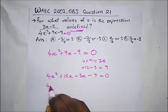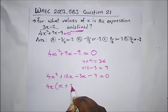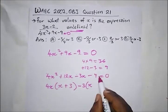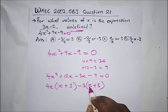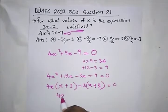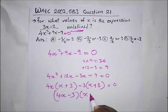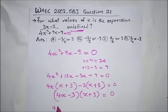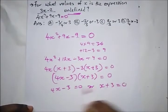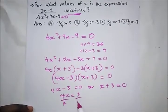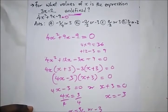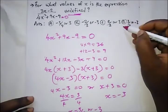Factorizing: 4X is common in the first pair giving 4X(X plus 3), and minus 3 is common in the second pair giving minus 3(X plus 3). So we have (4X minus 3)(X plus 3) equals zero. Therefore 4X minus 3 equals zero, giving X equals 3/4, or X plus 3 equals zero, giving X equals minus 3. The answer is option D.